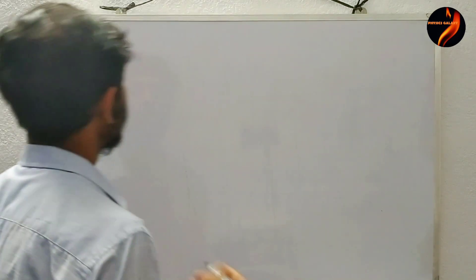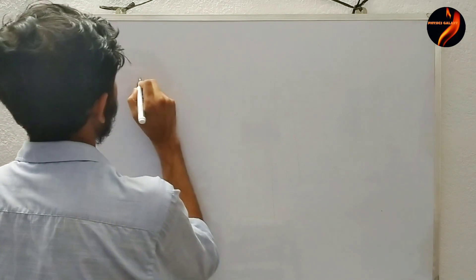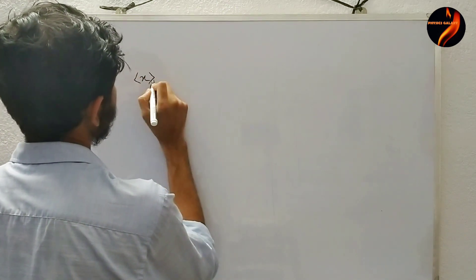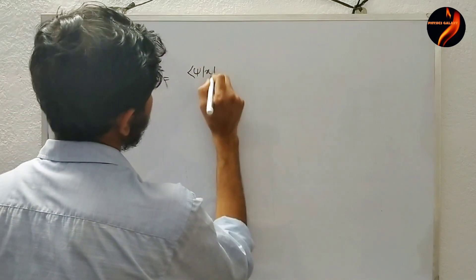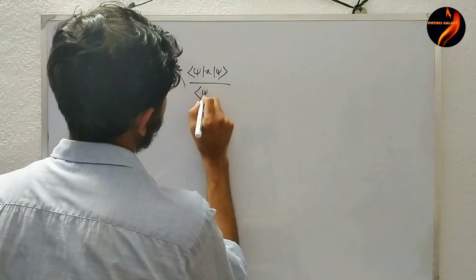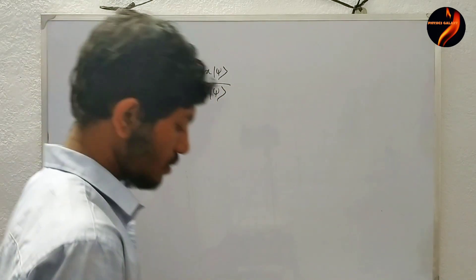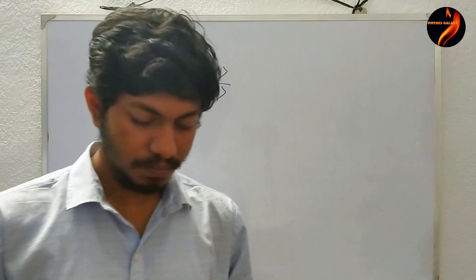I first told them the definition of a wave function and what it means, and then the definition of an expectation value. They asked me to write down the formula for an expectation value, and I wrote that the expectation value of some operator — for example, X, the position expectation value — is given by the standard integral formula.